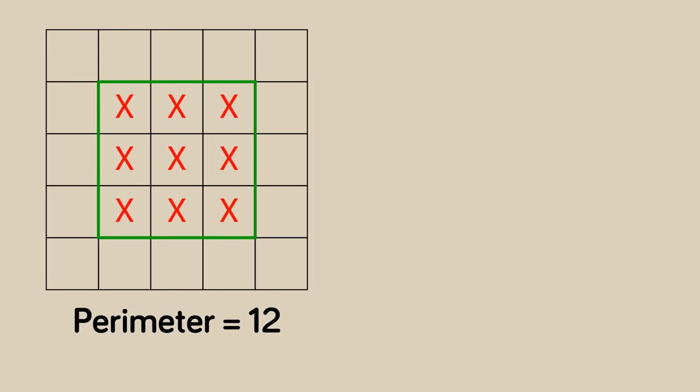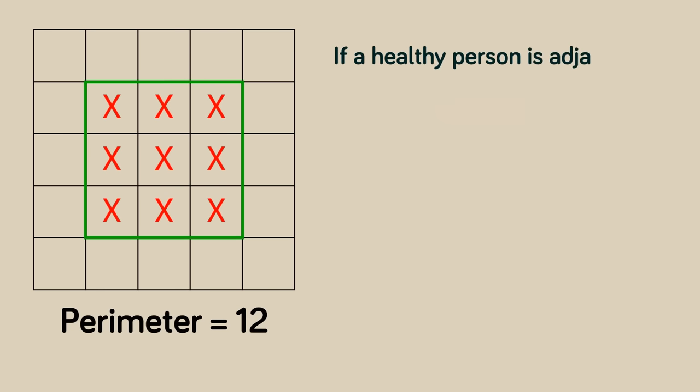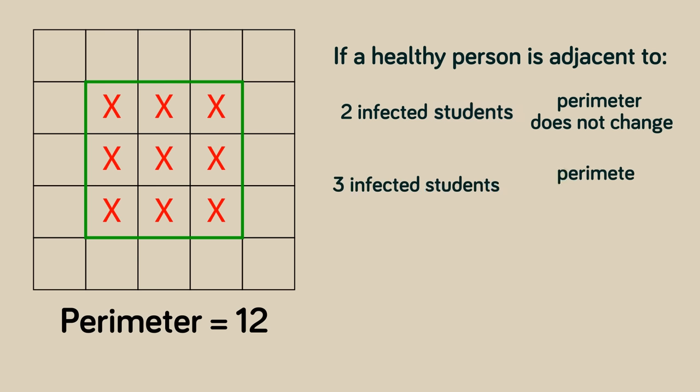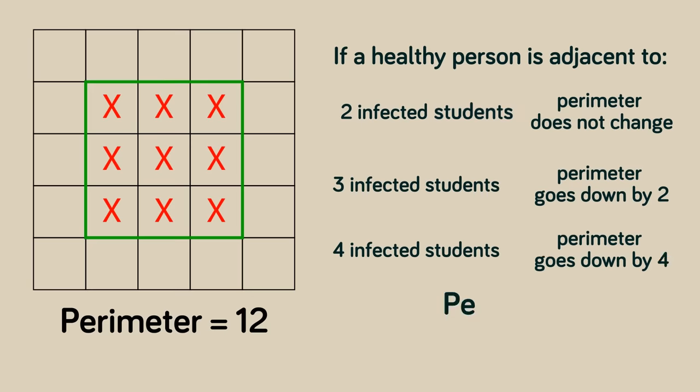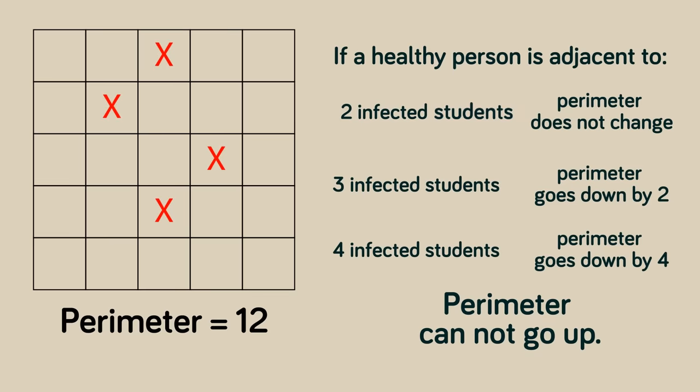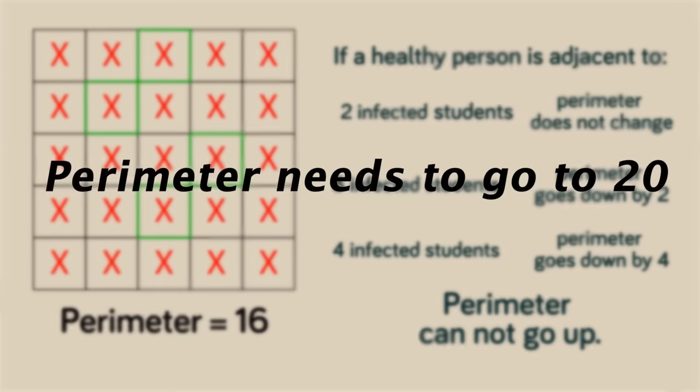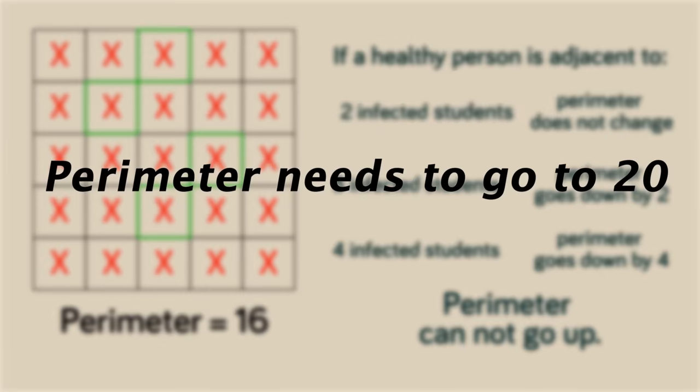So we can finally put this all together. If a healthy person is adjacent to two infected people, the perimeter does not change. If adjacent to three infected students, the perimeter goes down by two, and if adjacent to four infected students, the perimeter goes down by four. As we can see, the perimeter cannot go up. So when four people start out as infected, the perimeter is at most 16, and it could be less. But for everyone to be infected, the perimeter would need to go to 20, thus it would need to increase, which we just saw is impossible.